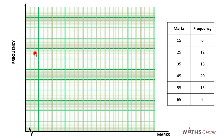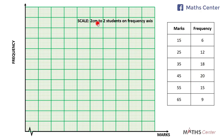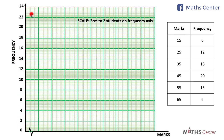We will have to choose a scale for our vertical axis. Looking at the values we have in the table, I will choose a scale of 2 centimeters to 2 units. So we will use that scale to number the vertical axis. So we have 0, 2, 4, 6, 8, and it continues up to 24.